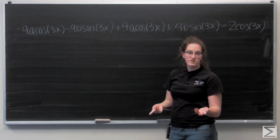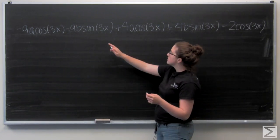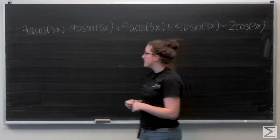So now I just need to solve for a and b. I'm going to start by grouping the terms with cosine 3x together and the terms with sine 3x together.